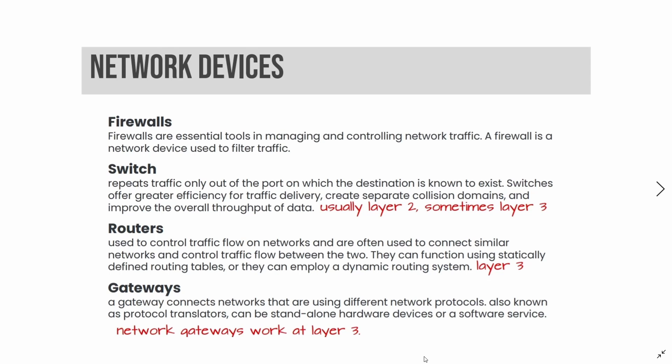Routers are used to control traffic flow on networks and are often used to connect similar networks. They can function using statically defined routing tables or employ a dynamic routing system. They operate at layer 3. A gateway connects networks that use different network protocols, and they are also known as protocol translators. They can be standalone hardware devices or software devices. Network gateways also work at layer 3.